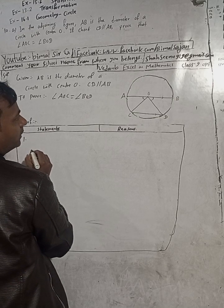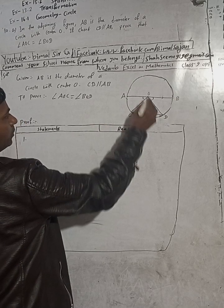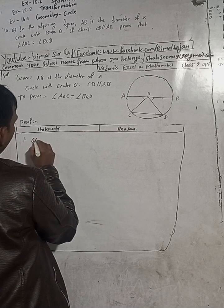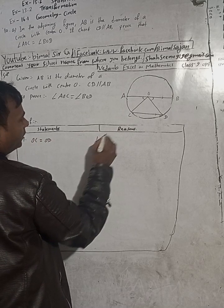One number you can write here. OA, OC is equal to OD. OC is equal to what? OD. The reason for this is what?